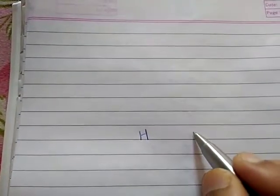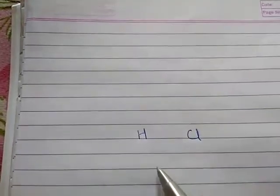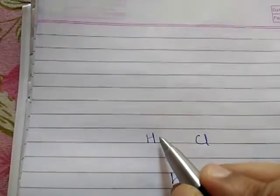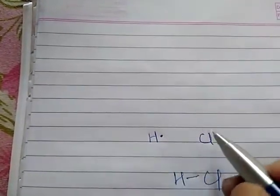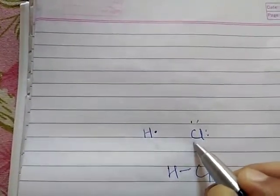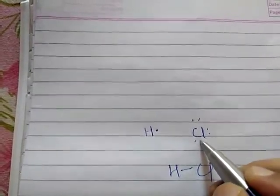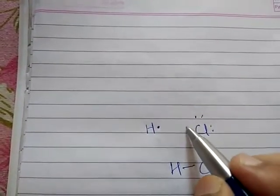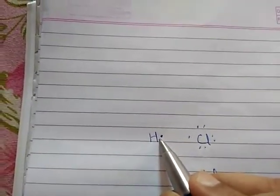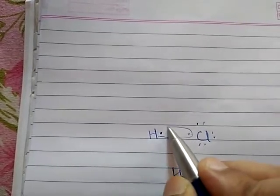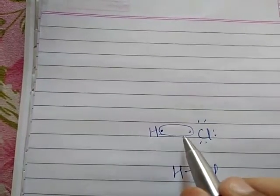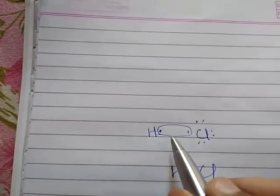This is hydrogen and this is chlorine — altogether this molecule is HCl. Hydrogen has one electron in its valence shell and chlorine has seven electrons in its valence shell. In order to complete the octet for chlorine and the duplet for hydrogen, they will share these electrons. But the sharing will not be 50-50 percent.